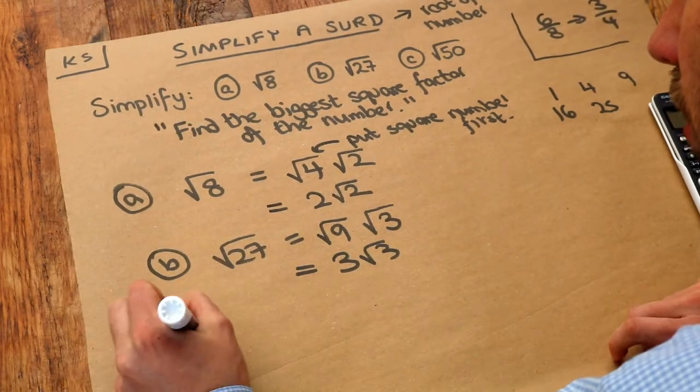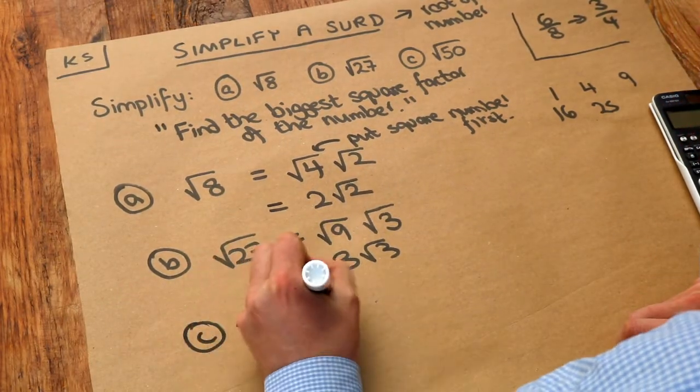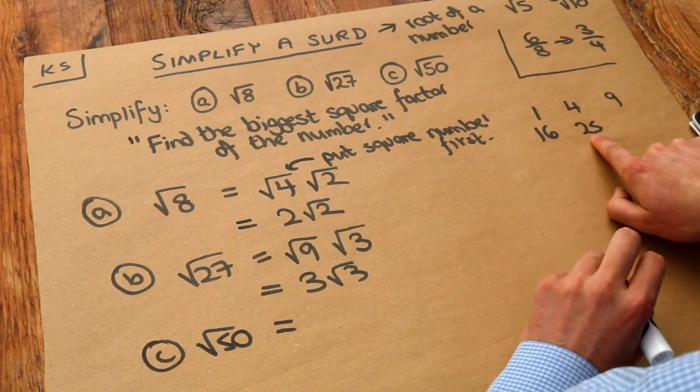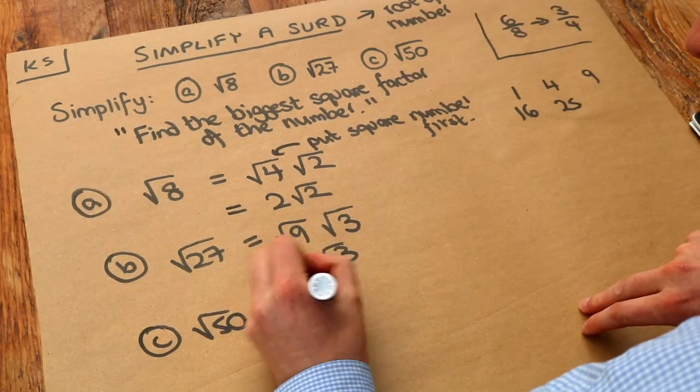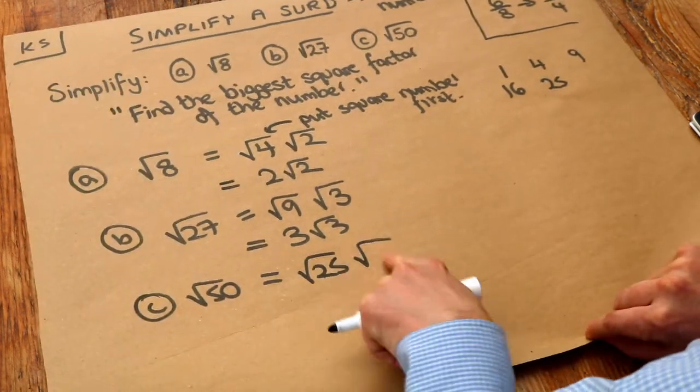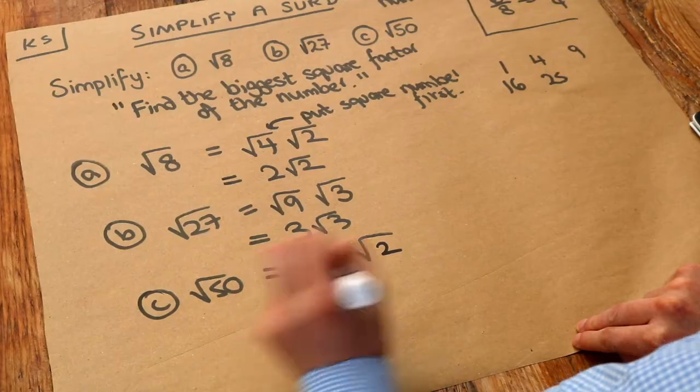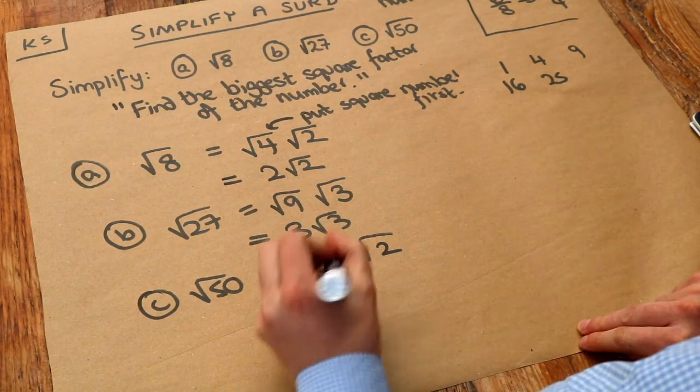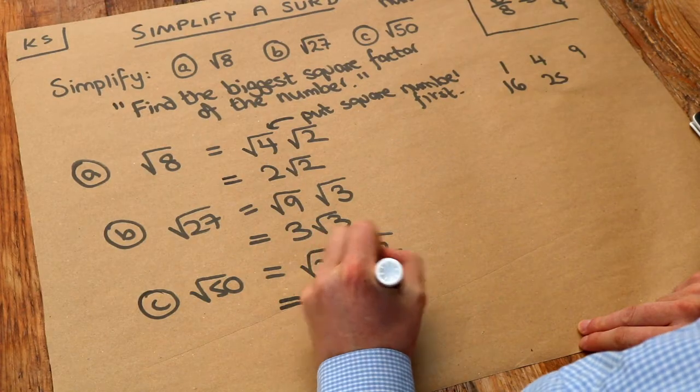The final one, root 50. What's the biggest square factor of 50? We can see here it's 25. So we write root 25 first, and 25 times what is 50? It's 2. And then we simplify. What's the square root of 25? It's 5, so we end up with 5 root 2.